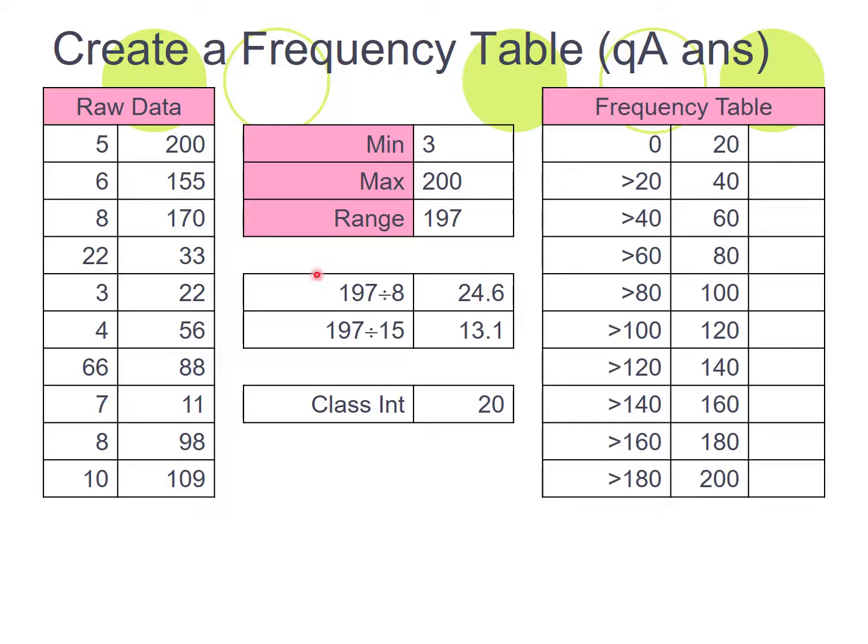The next thing we do then is we put in each of these pieces of data here. We cross them off as we do them and we put them into the categories here. So I'll just give an example of that. So 5 is going to go in here. 6 will go in here. 8 will go in here. 22 goes in here. 4, 3, 4,